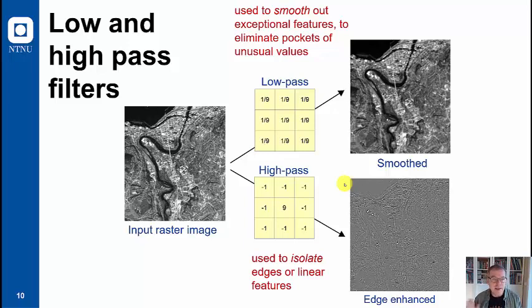A high pass is almost doing the opposite. It isolates edges or linear features and is very often done within geology to find lineaments in the landscape. For this urban image we typically highlight the streets in Trondheim. These are the linear features you see here.